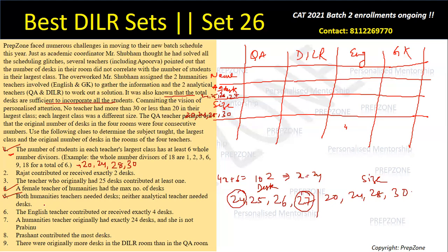The English teacher received exactly 4 desks. English is a humanities teacher who receives desks. If English had 27 desks, the class size would be 27 + 4 = 31, which is outside the valid range of 20–30, so that's impossible.